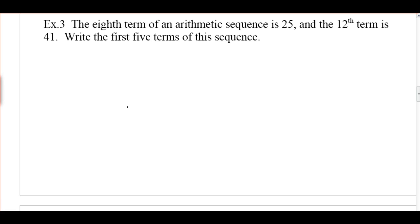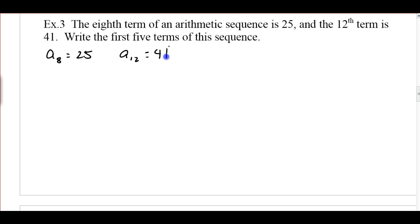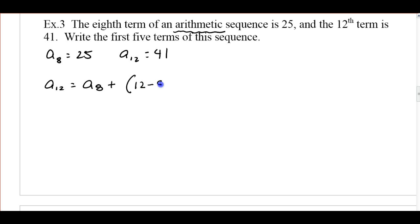If you have any questions, make sure you write those down and we'll talk about them at the beginning of class. Next example: we know the 8th term of an arithmetic sequence is 25 — a sub 8 equals 25 — and the 12th term, a sub 12, is 41. We want to write the first five terms of this sequence. We have to find the common difference and the first term. The 12th term is related to the 8th term by adding the common difference 12 minus 8, or 4 times.